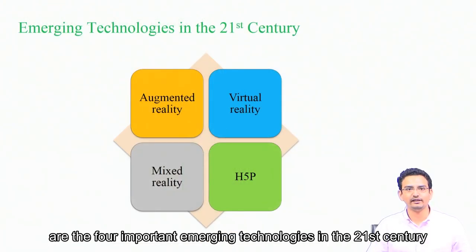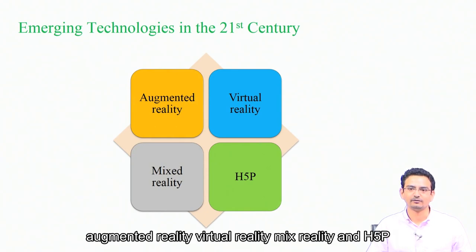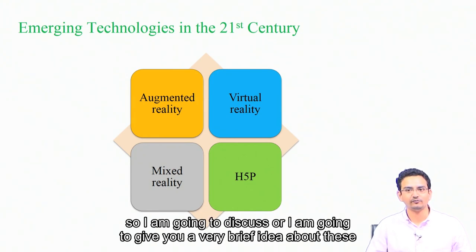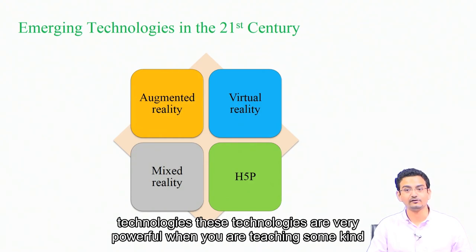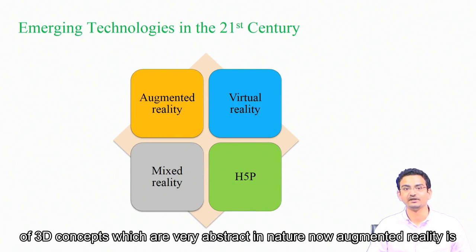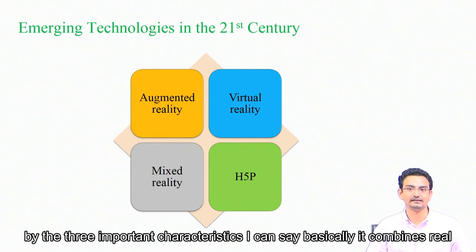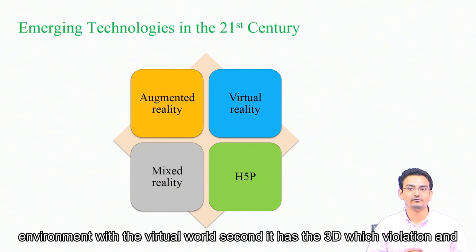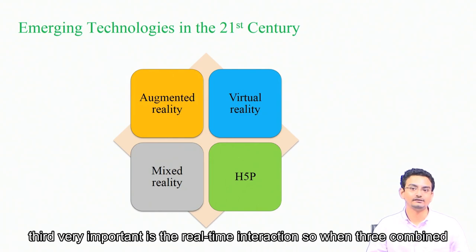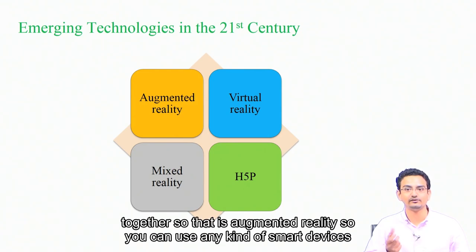These are the four important emerging technologies in the 21st century: augmented reality, virtual reality, mixed reality, and H5P. I am going to give you a very brief idea about these technologies. These technologies are very powerful when you are teaching some kind of 3D concepts which are very abstract in nature. Augmented reality is basically adding a virtual element in the real environment. It combines three important characteristics: real environment with the virtual world, 3D visualization, and real-time interaction. When these three combine together, that is augmented reality.